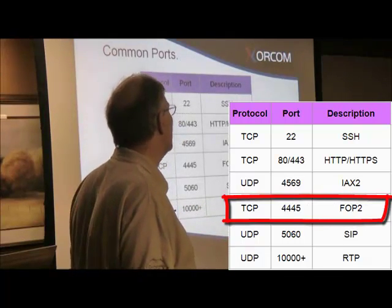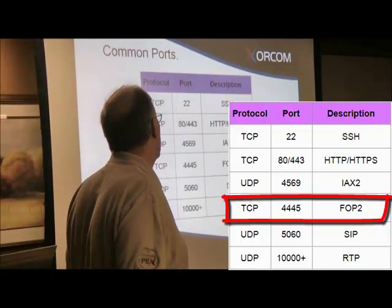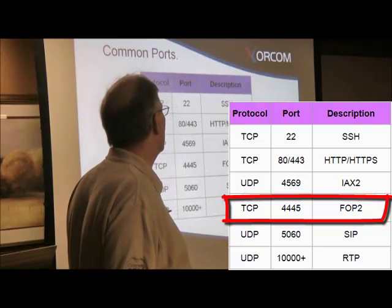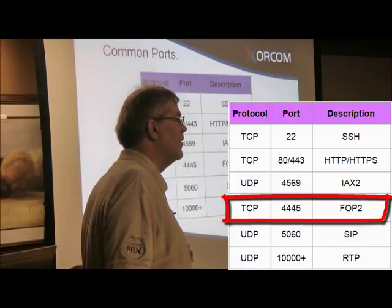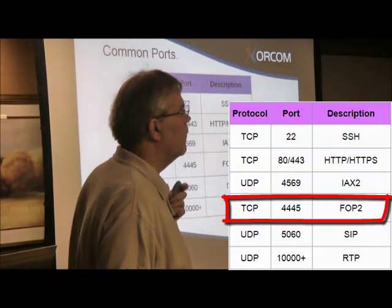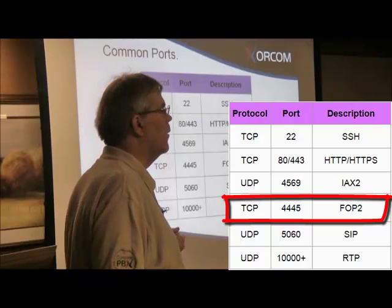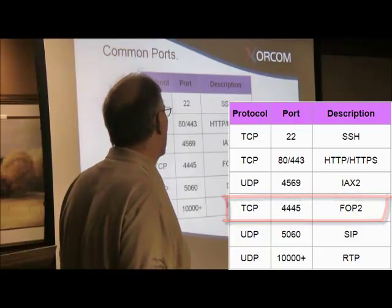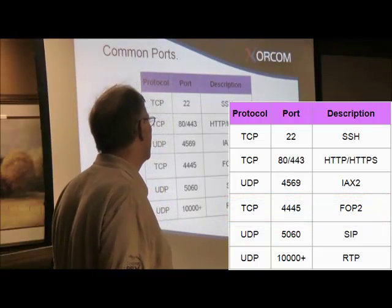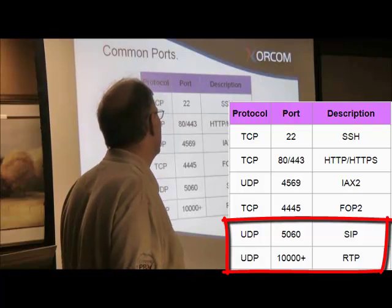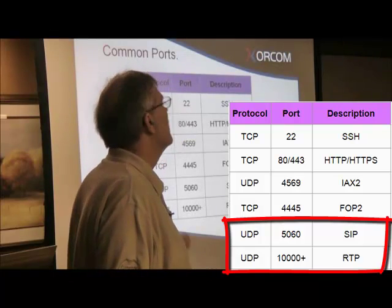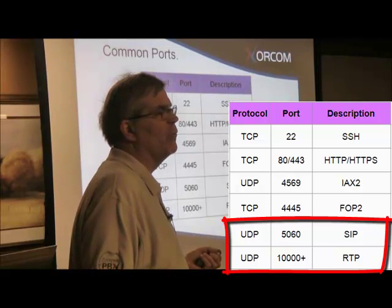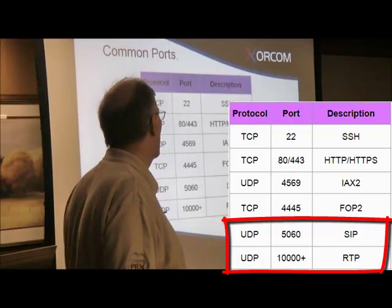Port 4445 is our Flash Operator Panel control port. You can see anything you want if you open up 4445, but you can't necessarily whisper or spy because it's going to try to run RTP packets through your firewall. Your RTP packets are going to be from 10,000 to 20,000, and your SIP controls would be port 5060 or 5064. These are the ports you need to worry about when you want to manage your system remotely or have remote phones.